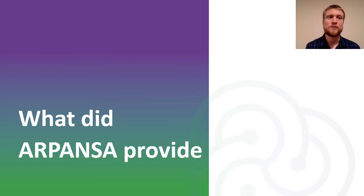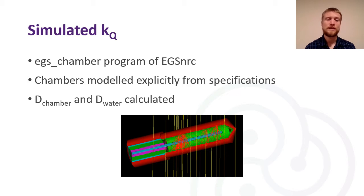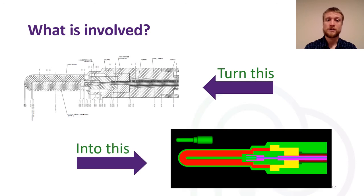ARPANSA contributed multiple simulated KQ data points, all simulated with the EGS-NRC program EGSnrc. All chambers are modelled explicitly from manufacturers' blueprints and specifications. In each case, for each chamber and energy, we modelled the dose to the chamber and dose to a water volume. This involves taking the manufacturer's specifications or blueprints — very detailed drawings — and turning them into an equally detailed Monte Carlo model, so that we can use that in simulations to get the most accurate possible understanding of radiation propagation and dose deposition in the ionization chambers.